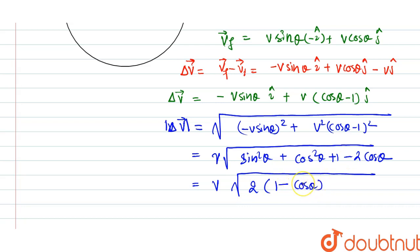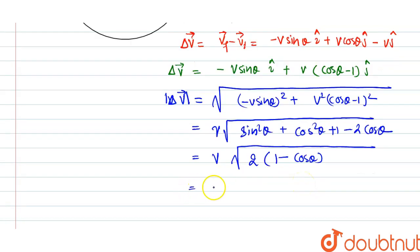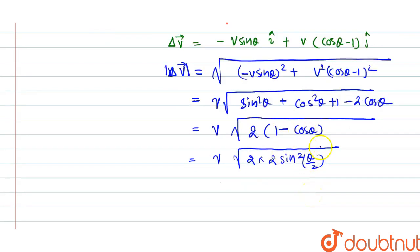So 2 into sin square theta by 2. 1 minus cos theta is 2 into sin square theta by 2. So 2 and 4, and after doing all this thing, v into 2, v into sin theta by 2, is the magnitude of change in velocity. And this is our answer.